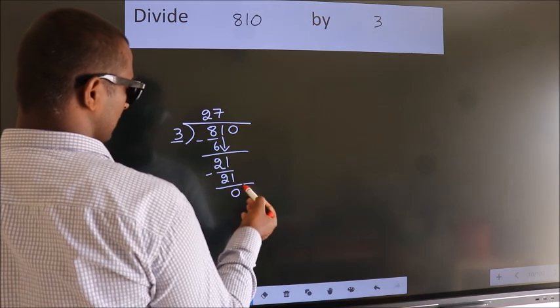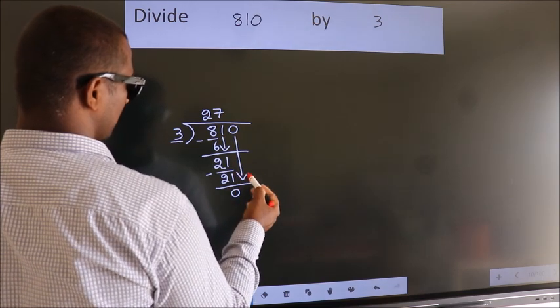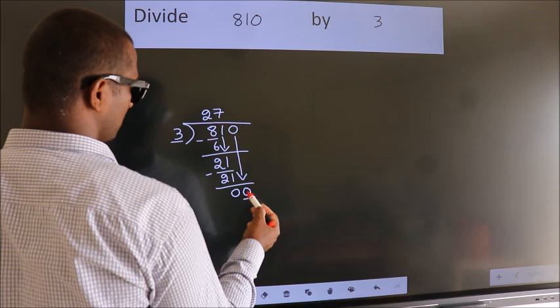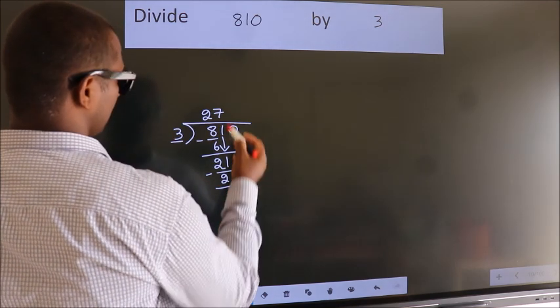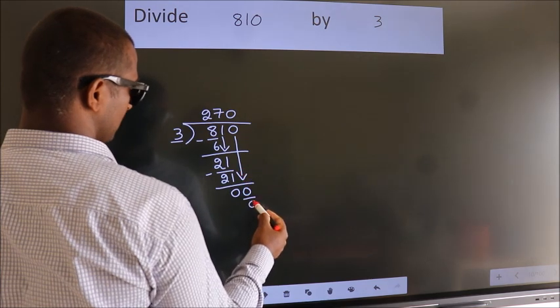After this, bring down the beside number. So 0 down. So 0. When do we get 0 in 3 table? 3 times 0. 0.